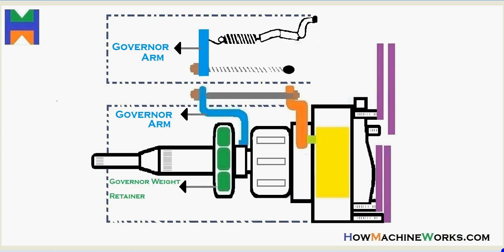So let's identify the components. That's the governor weight retainer over there. Then we have the metering valve in orange.